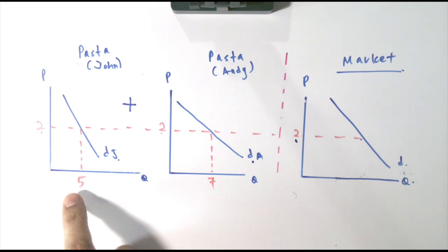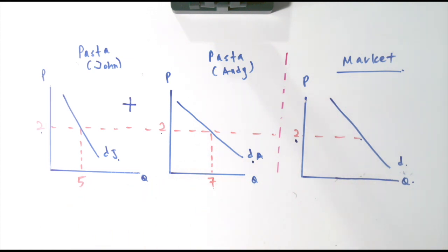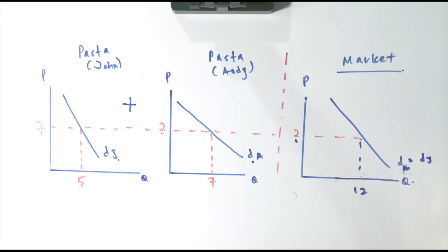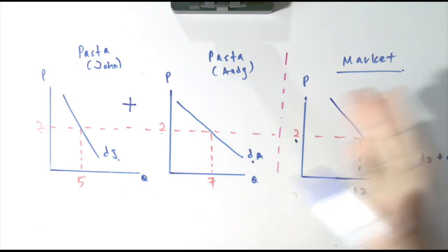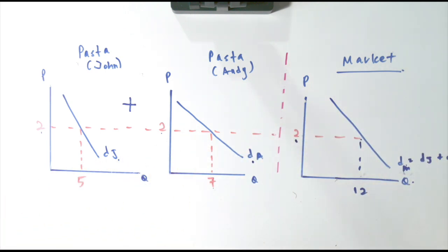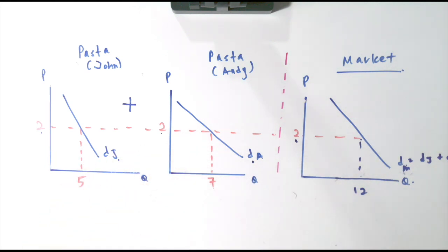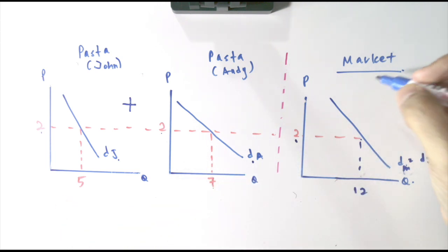The market demand curve is an aggregate of all the individual demand curves — it's a summation of all the individual demand curves. In reality, we might not only have two individuals, we will have more than two. So by taking the summation, we can get the market demand curve for pasta.